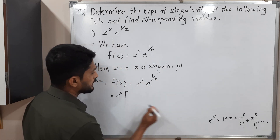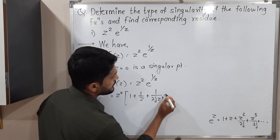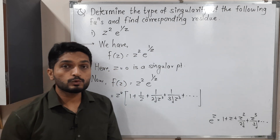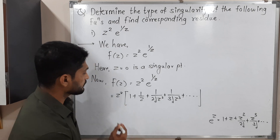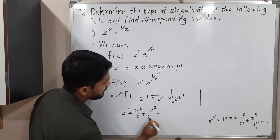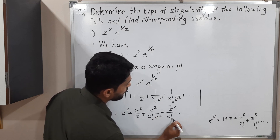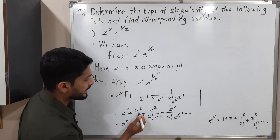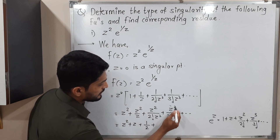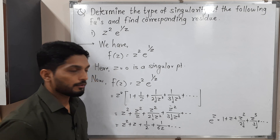So f(z) = z² · (1 + 1/z + 1/(2!·z²) + 1/(3!·z³) + ...). Multiplying each term by z²: z² · 1 = z², z² · 1/z = z, z² · 1/(2!·z²) = 1/2, z² · 1/(3!·z³) = 1/(6z), and so on.